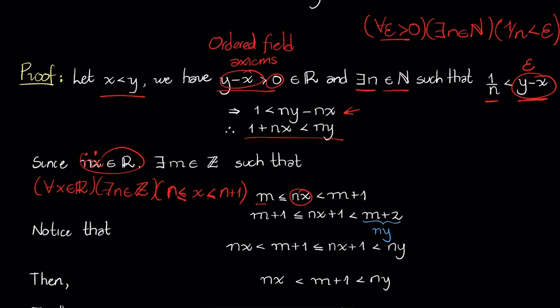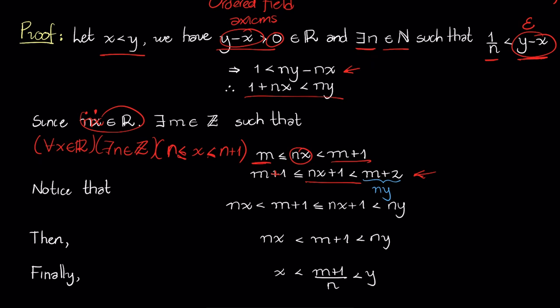Then doing a little bit of modification, adding one to this inequality, we will have the following inequality. Now, if we take this inequality, we notice that nx plus one is the same as one plus nx, and this is strictly less than ny, so that's why we have ny here. We combine this inequality with this inequality, and we will get this inequality.